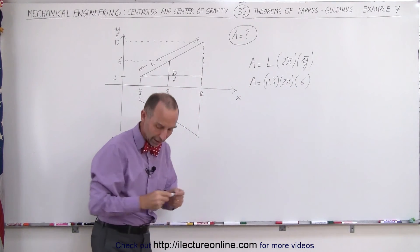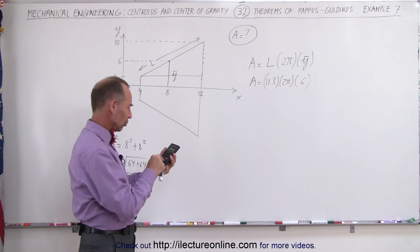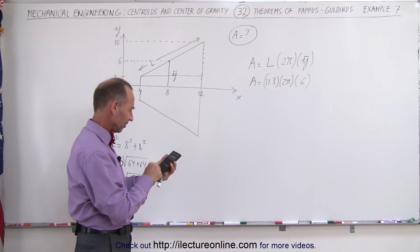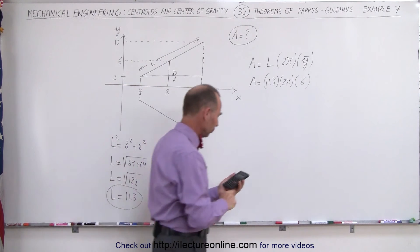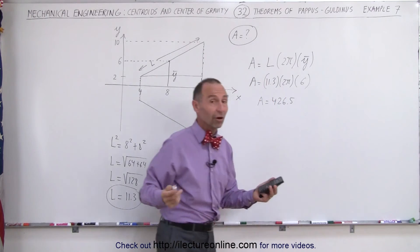Now we're ready to calculate the area of the truncated cone. 11.3 times 2 times pi times 6 equals the total area, which would be 426.5 in whatever units these are.